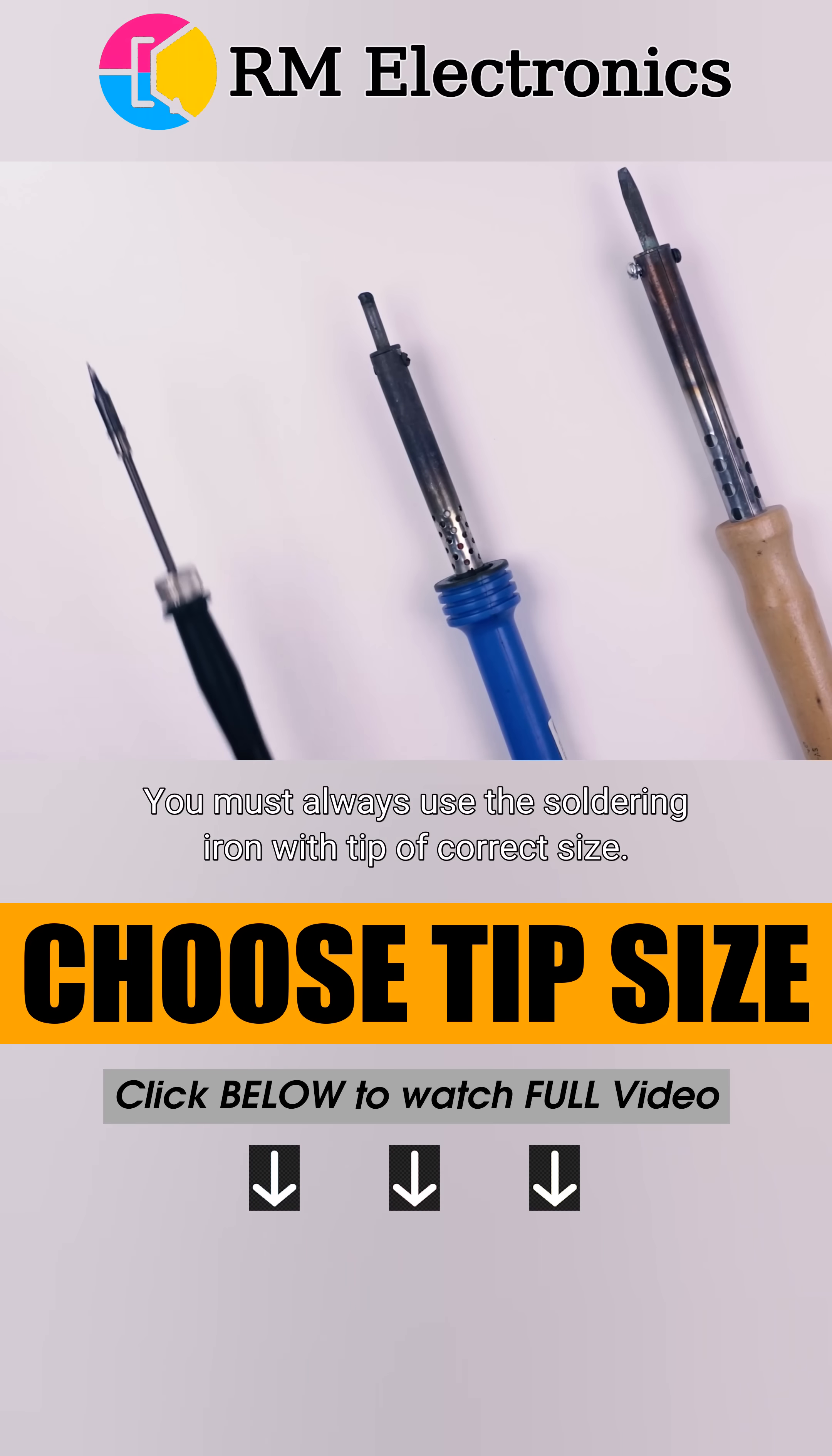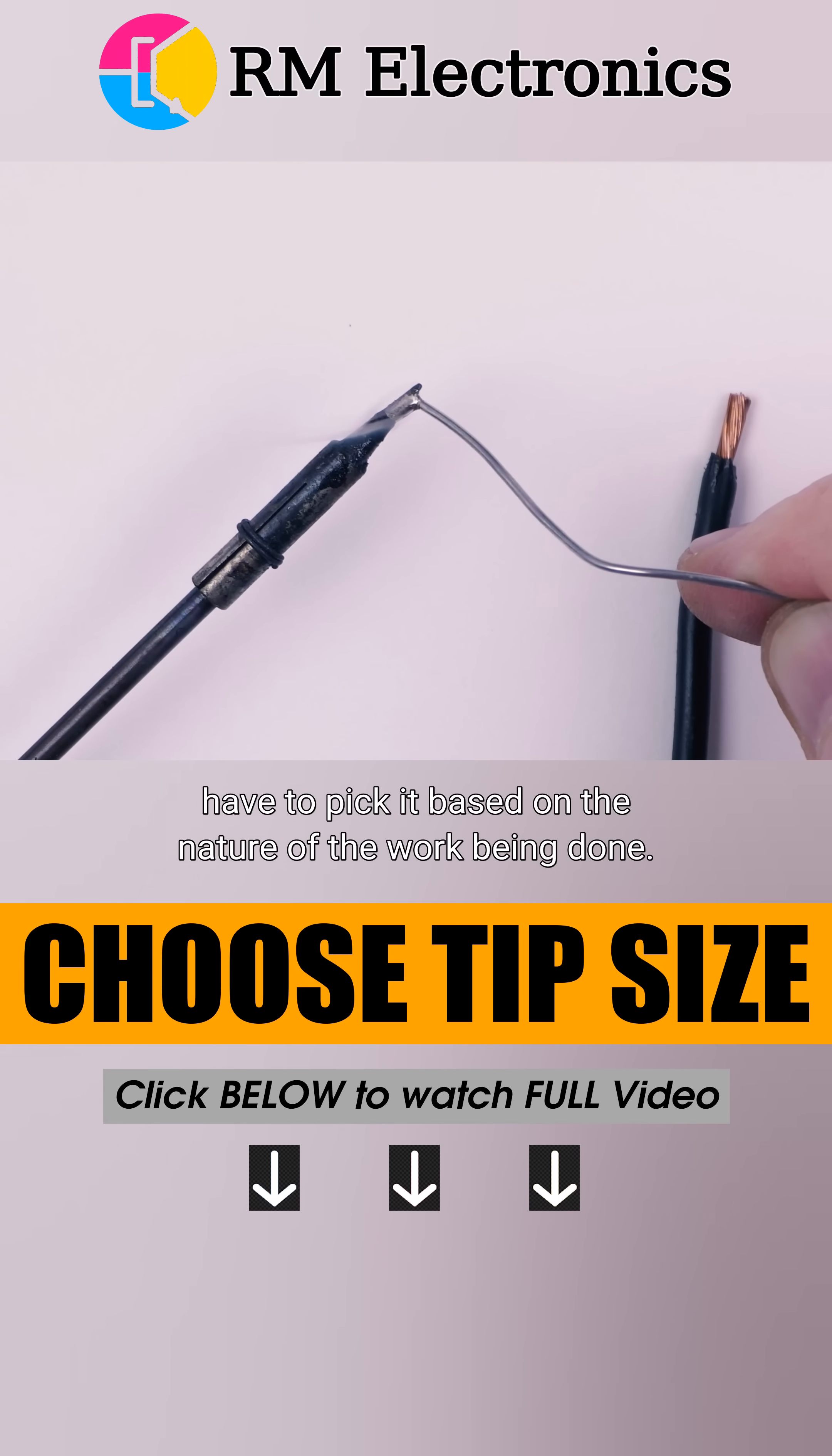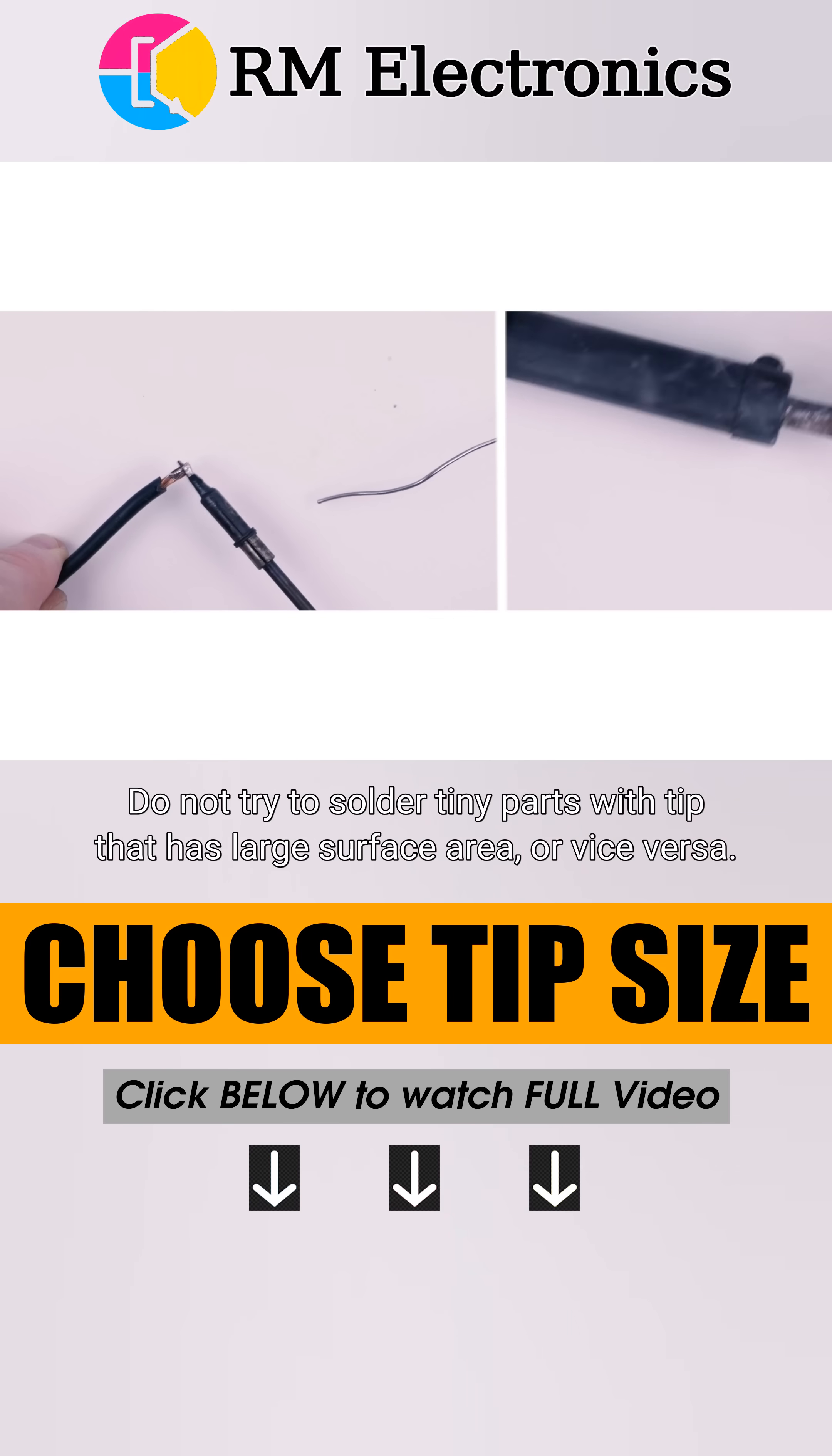You must always use the soldering iron with a tip of correct size. You have to pick it based on the nature of the work being done. Do not try to solder tiny parts with a tip that has large surface area, or vice versa.